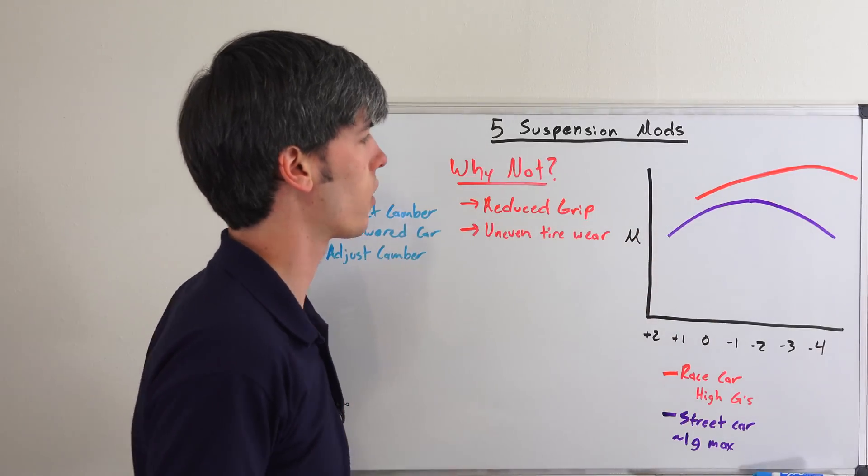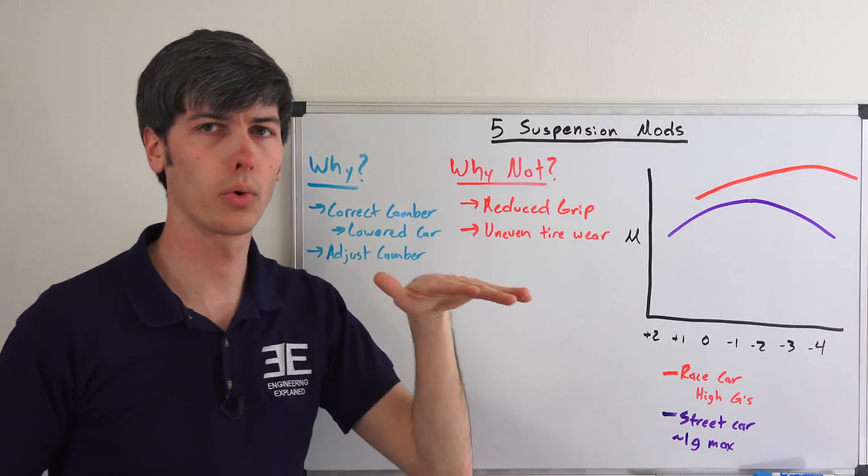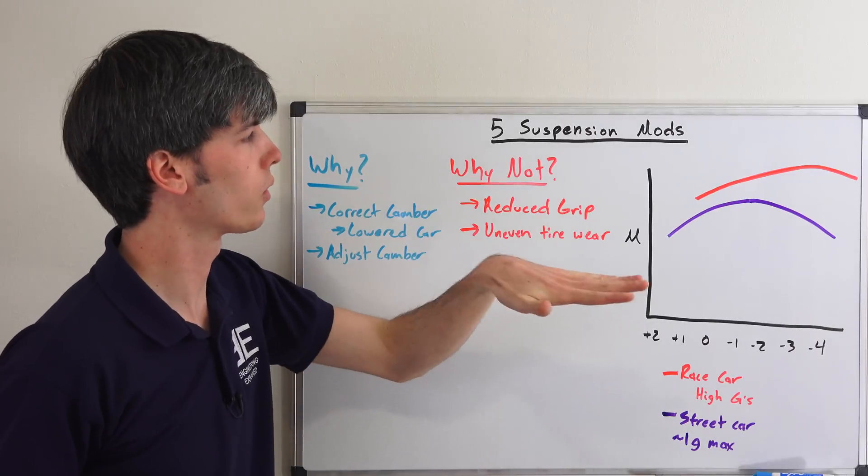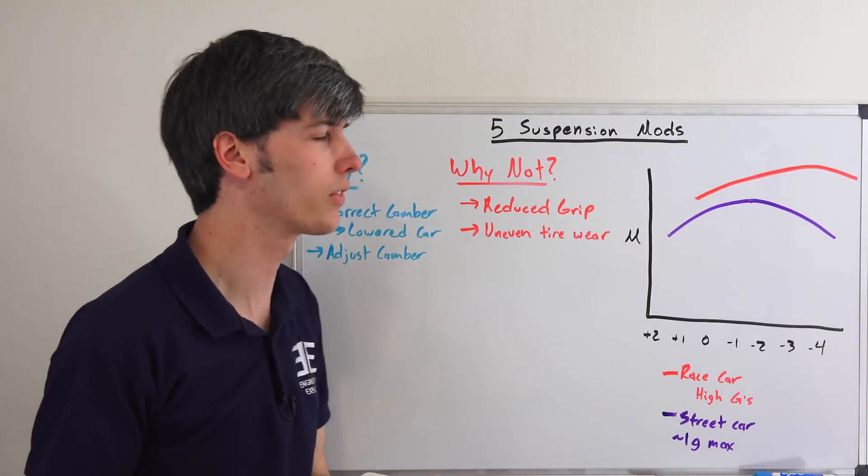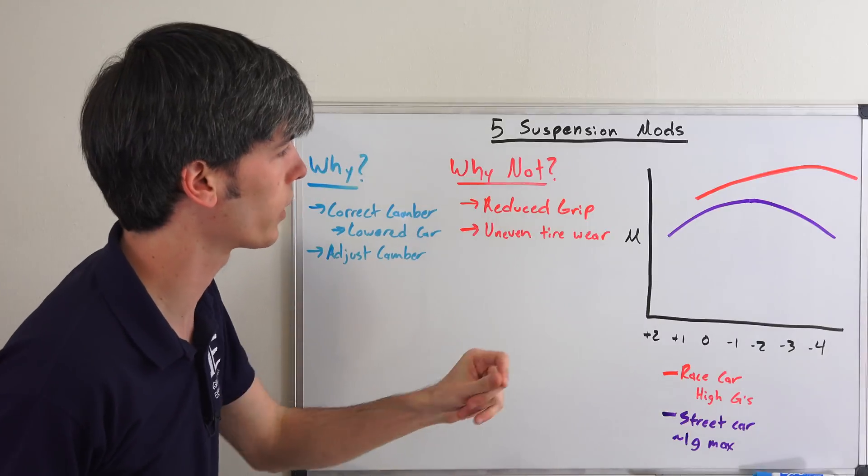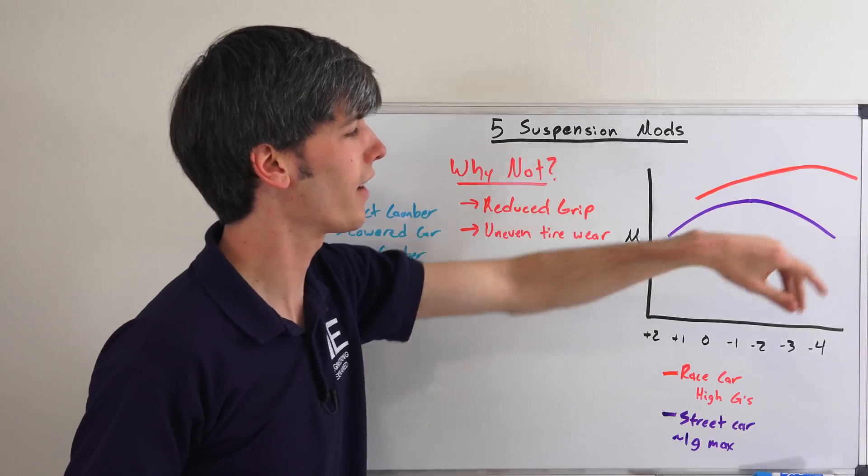Typically for a street car, that's because you have about 1g of lateral force maximum that you can hold. For a race car it's a different story because they tend to hold higher Gs and have different tires with more grip. So it can be a higher number—it could be as high as 3 or 4, even higher than that.